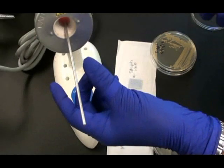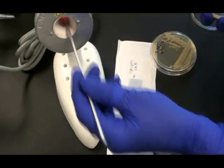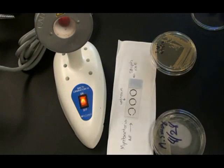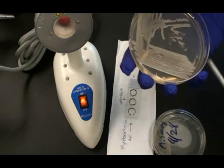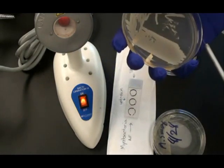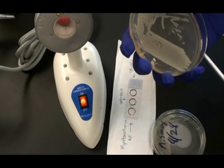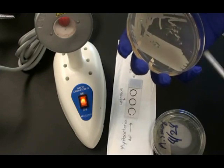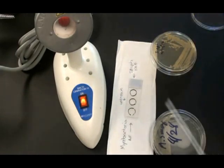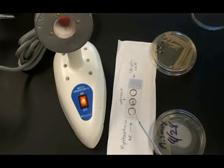I sterilize my loop, let it cool, and then I can obtain my unknown bacterial sample. Again, I gently move my loop across a colony in that unknown sample and mix that into the water droplet in the center of the slide.